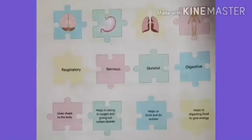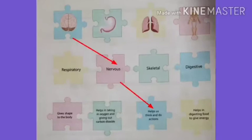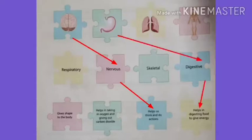In this exercise, organs, organ system names, and their functions are given. Let's match correctly. The first picture is the brain — it comes under the nervous system. The function of the nervous system is it helps us think and do actions. The second picture is the stomach — it is part of the digestive system. The function of the digestive system is it helps in digesting food to give energy.